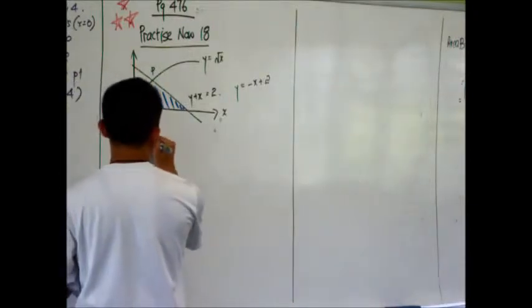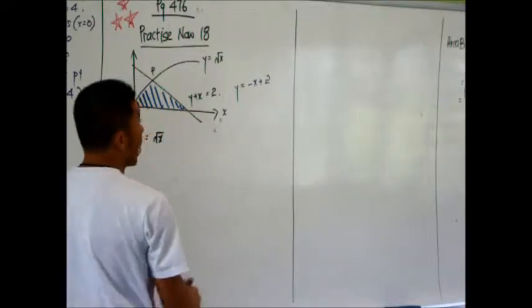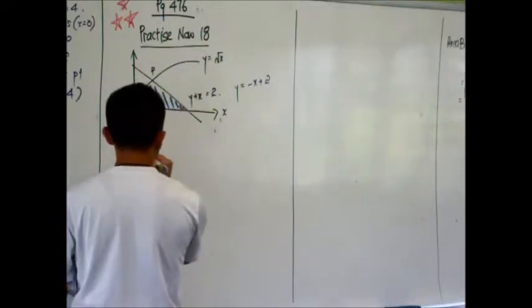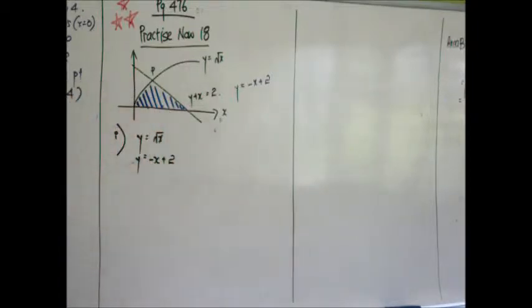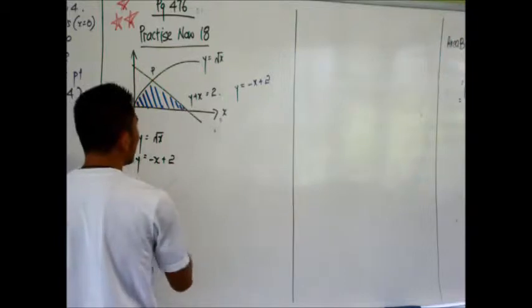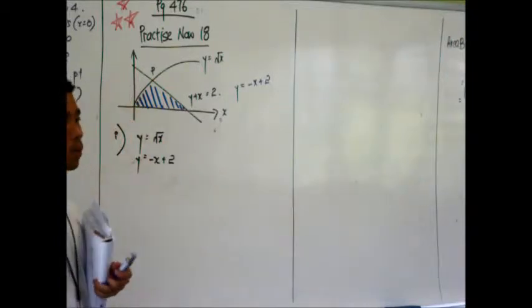The curve is y equals root x. As I just written out, the straight line is negative x plus 2. Can I give you 2 minutes? Let's go ahead and find out the coordinates of P by solving this pair of simultaneous equations.